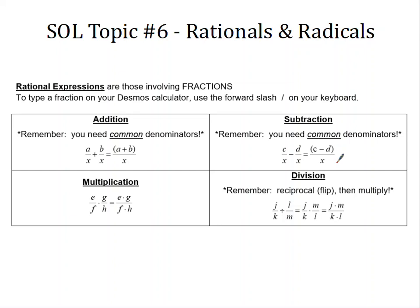When we are multiplying fractions, we just multiply straight across. We multiply the numerators together, we multiply the denominators together. You do not need a common denominator to multiply — you simply multiply straight across. For division, the first thing we want to do is change it to a multiplication problem by taking the reciprocal of the second fraction, or simply flipping it upside down. Then we multiply straight across.